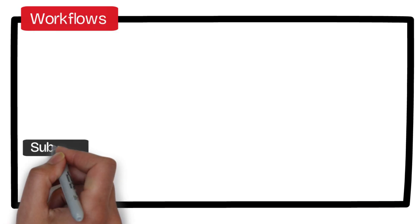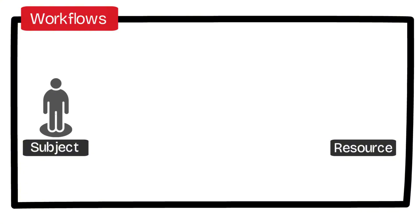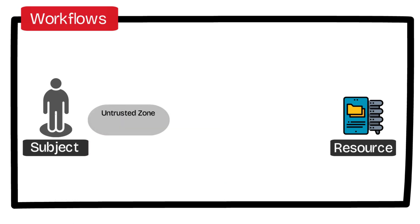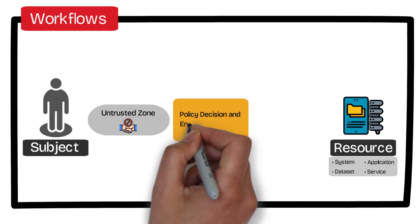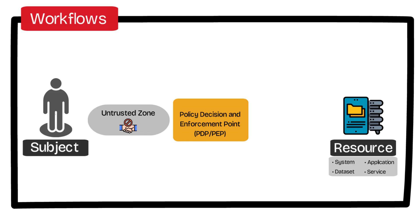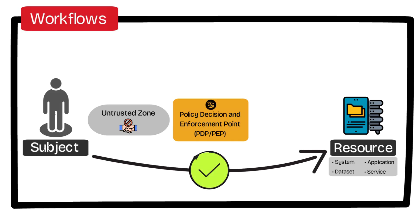At its most basic level, NIST 800-207 defines a zero trust workflow with a subject attempting to access a resource. A subject is defined as either a user or machine coming from anywhere in the world. In zero trust, since there's no more concept of a traditional perimeter, this area is called the untrusted zone. The resource being accessed represents the protected element, whether it's a system, data set, application, or service that the organization aims to secure. In between the subject and resource is the policy decision and enforcement point, which brokers connections based on a number of different factors. This component validates an authorized request from the subject to the resource.